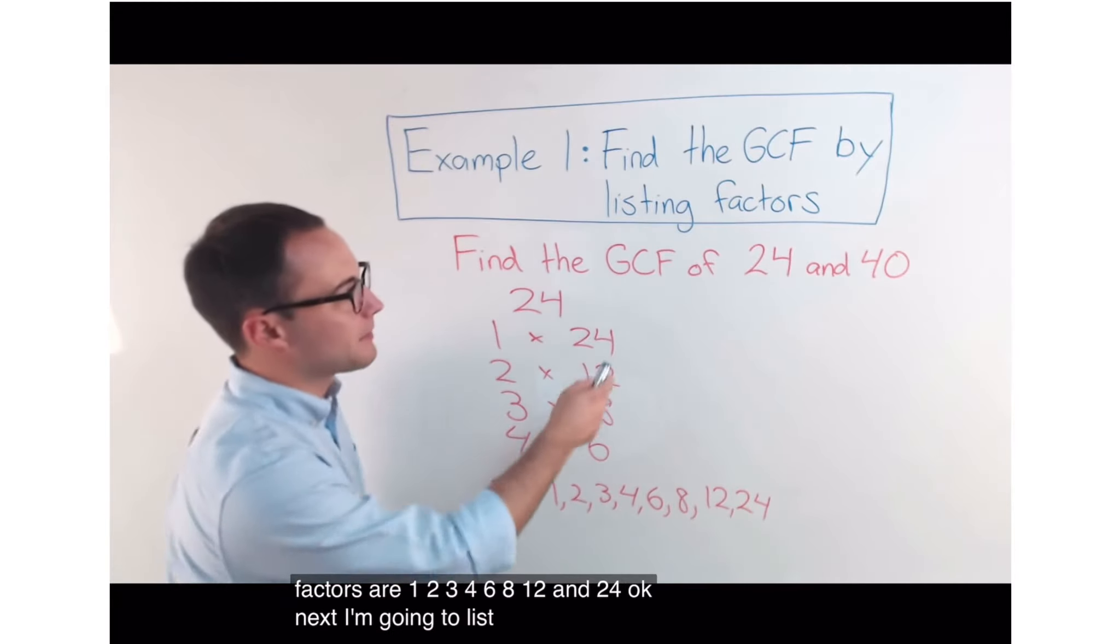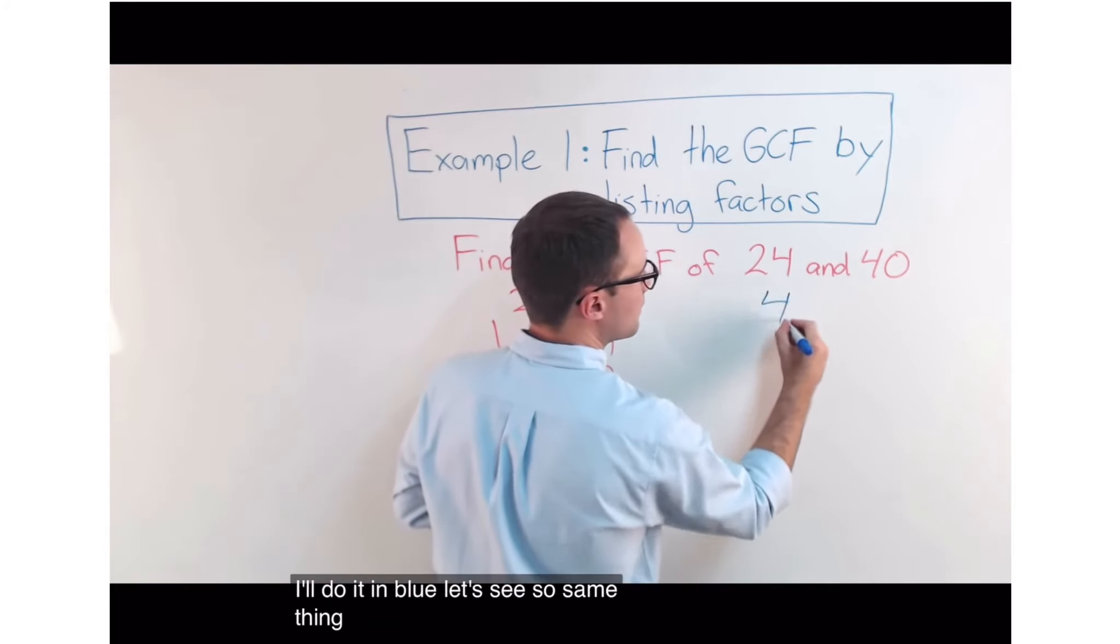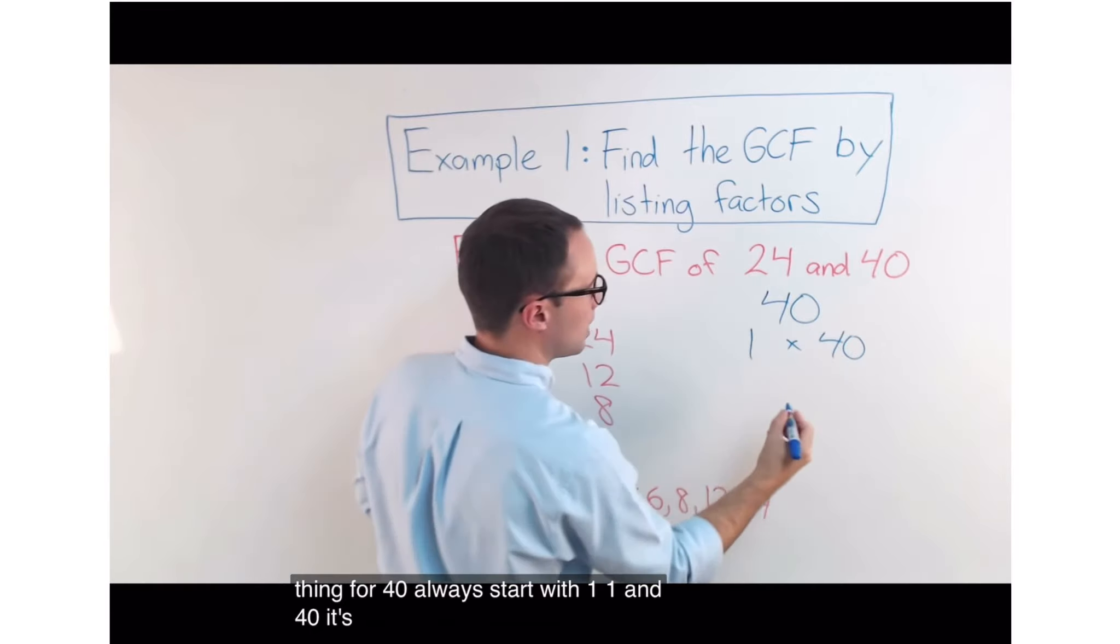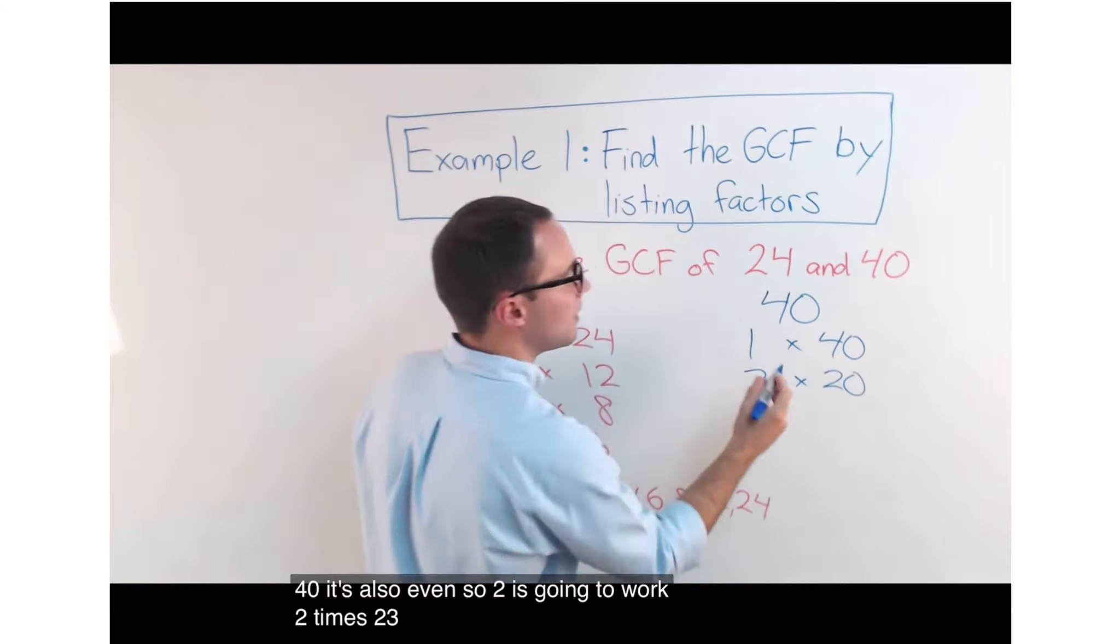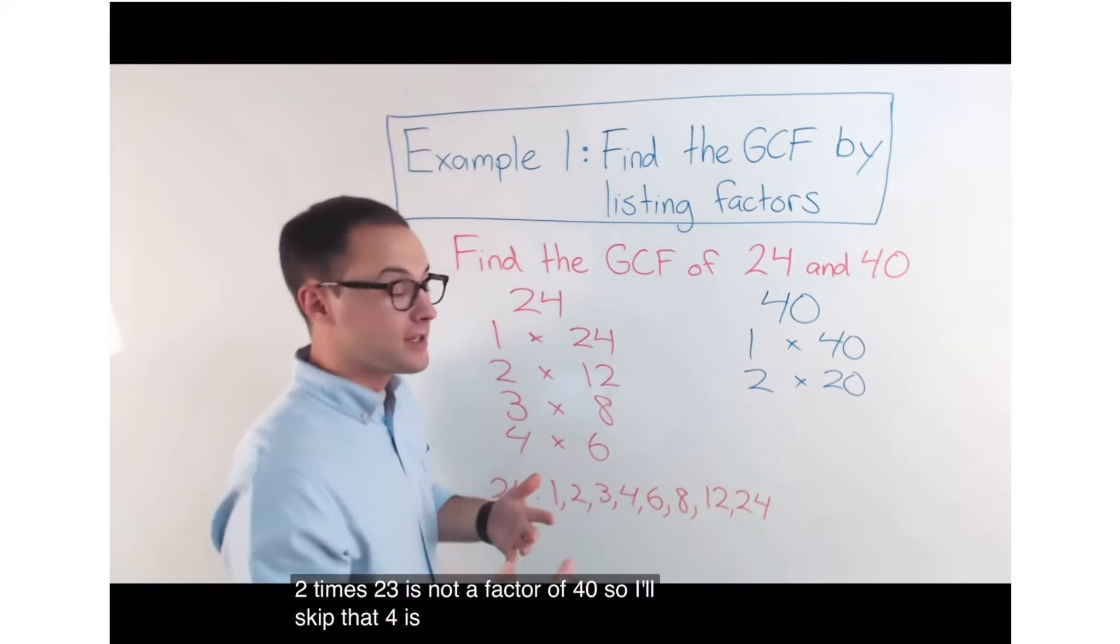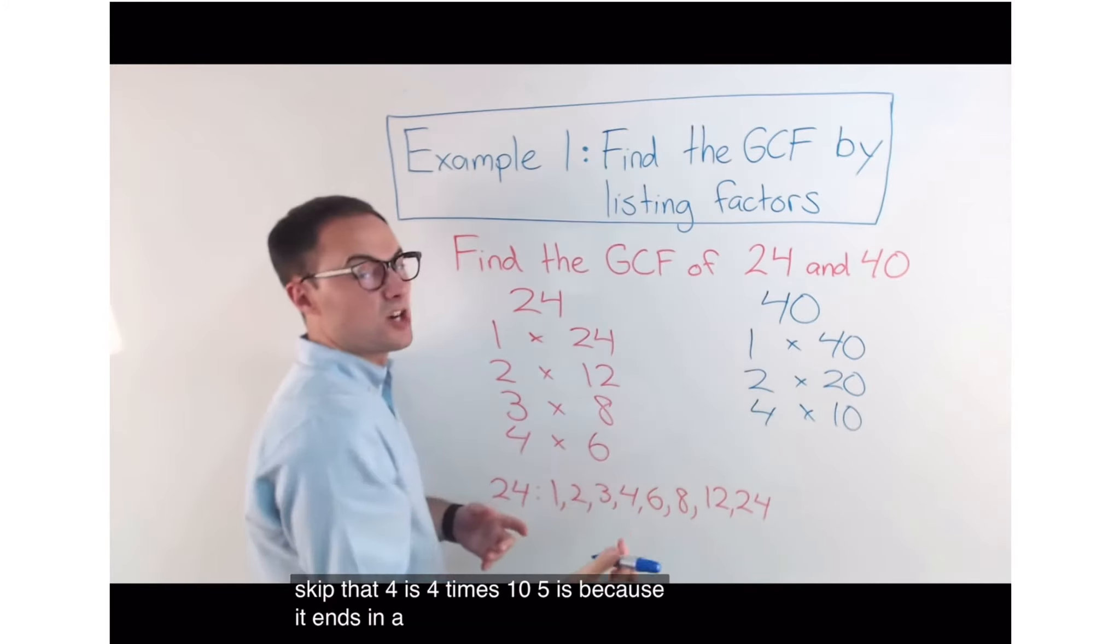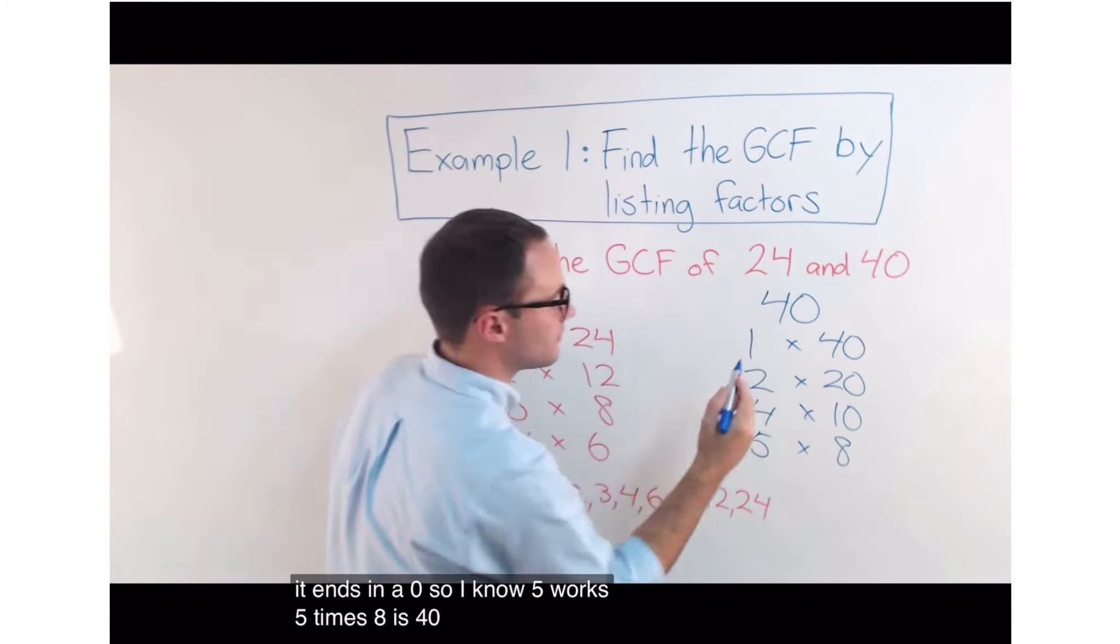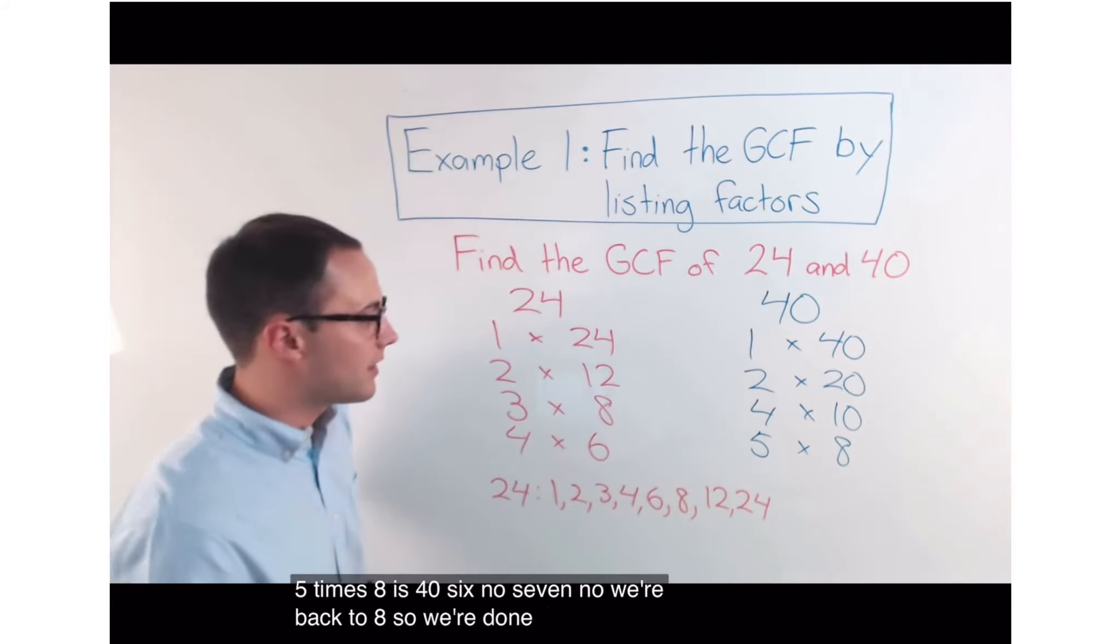Next, I'm going to list my factors of 40. I'll do it in blue. Let's see. So, same thing. For 40, always start with 1. 1 and 40. It's also even. So, 2 is going to work. 2 times 20. 3 is not a factor of 40. So, I'll skip that. 4 is 4 times 10. 5 is because it ends in a 0. So, I know 5 works. 5 times 8 is 40. 6, no. 7, no. We're back to 8. So, we're done there.